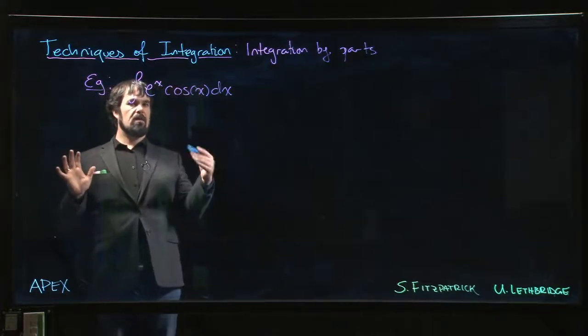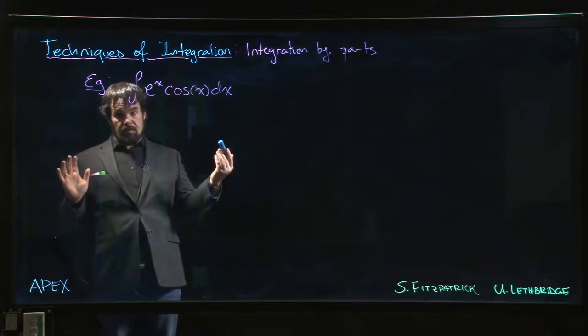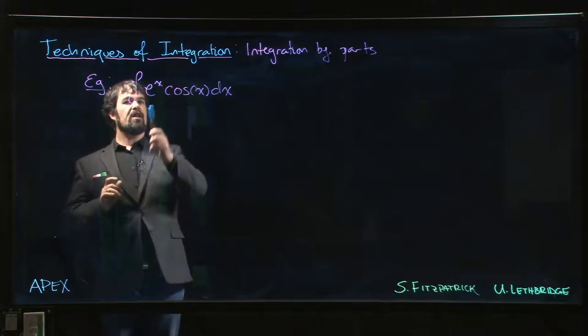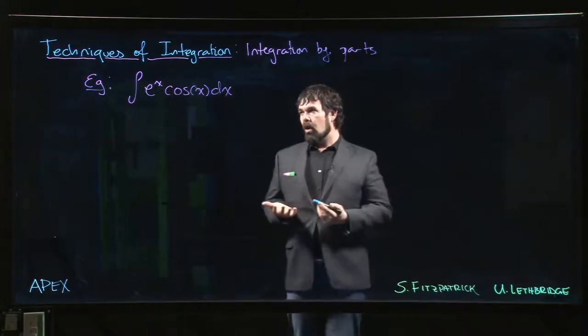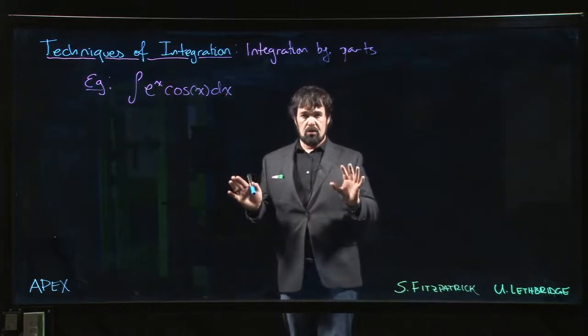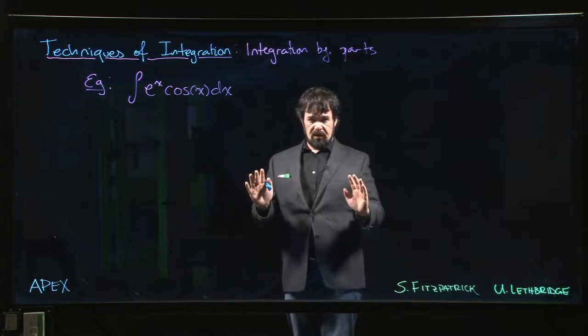But once you get the idea you'll be able to apply it to similar problems. The main issue here, what kind of makes this a bit more of a challenge, is that e to the x and cos x are both typically not your first choice for u when you're choosing your u and your dv, right?